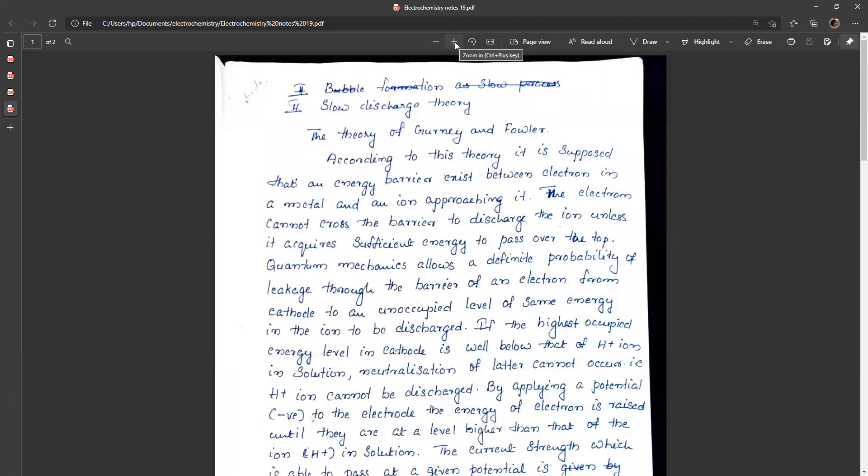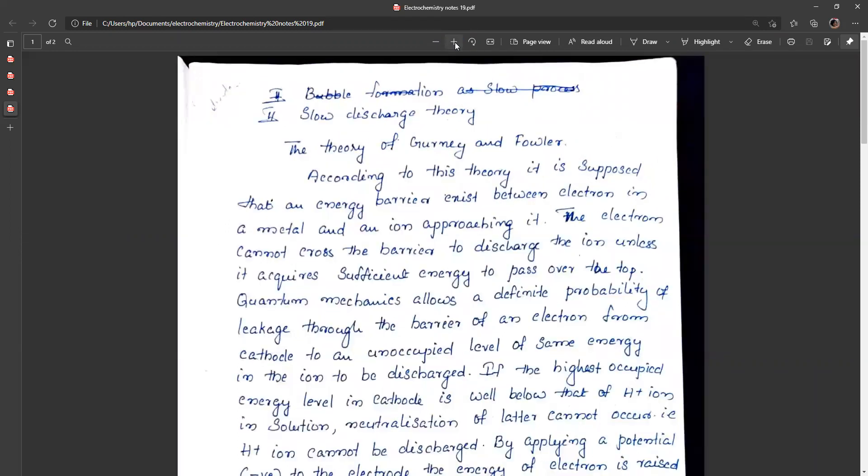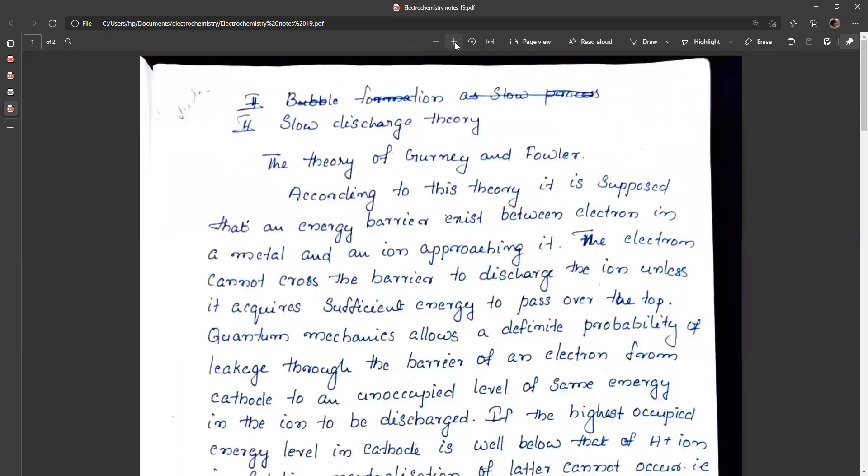Today we are going to discuss the second theory of overvoltage. Yesterday we discussed the first theory by Ehring-Glaston and Ehring-Ladler. The next theory is the slow discharge theory by Gurney and Fowler.